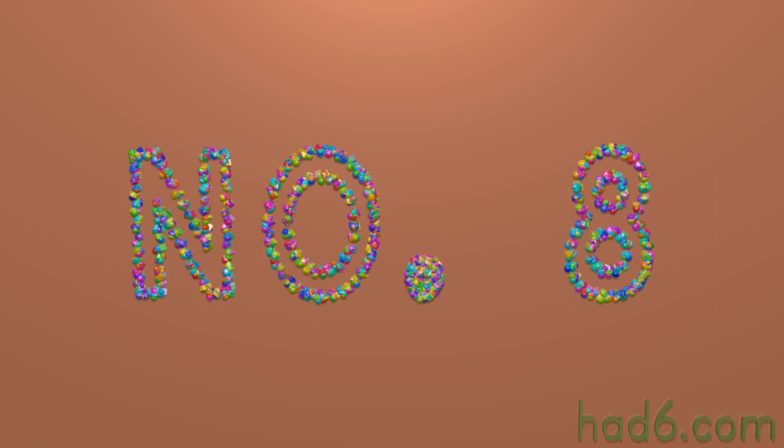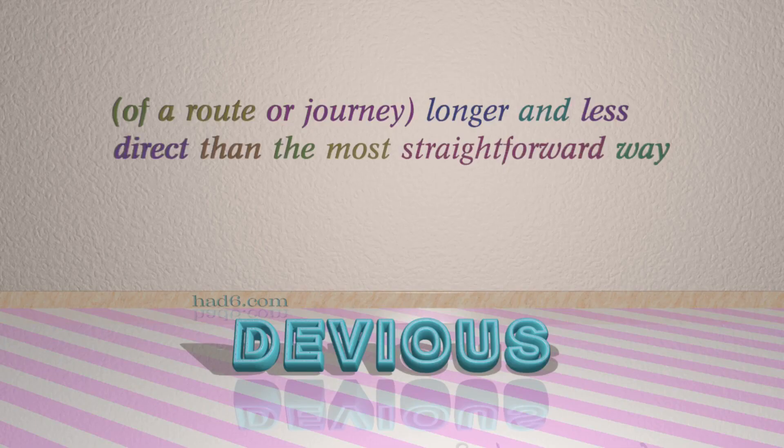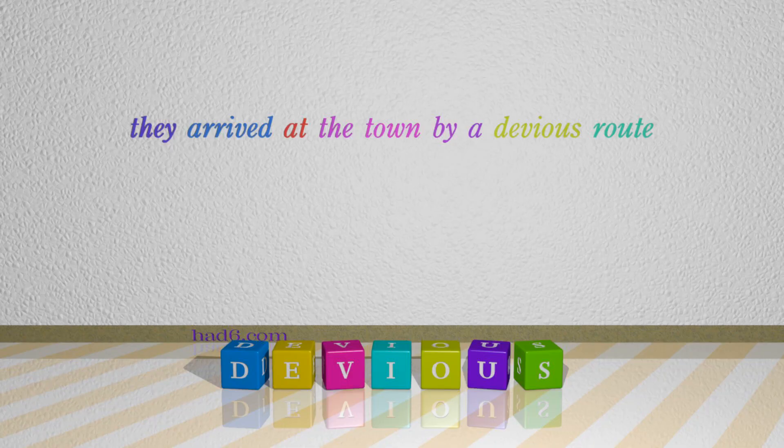Number 8: Devious. Which means of a route or journey longer and less direct than the most straightforward way. For example: They arrived at the town by a devious route.